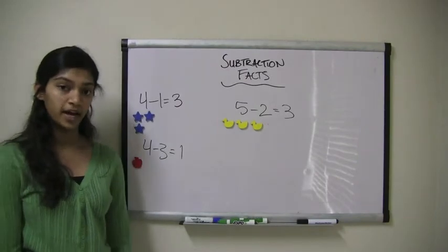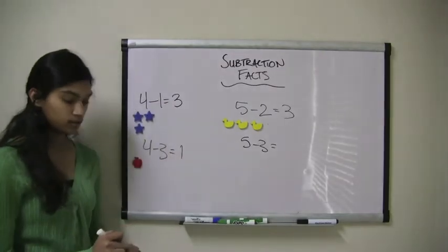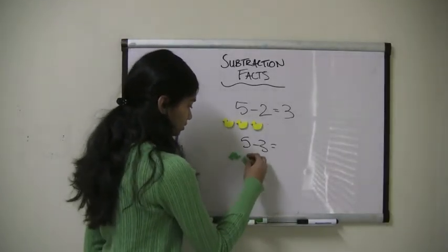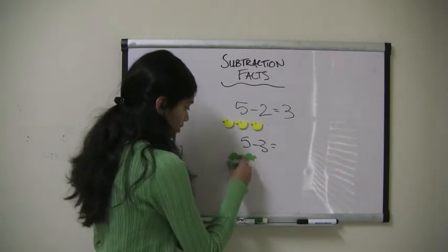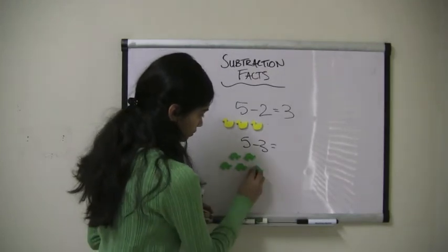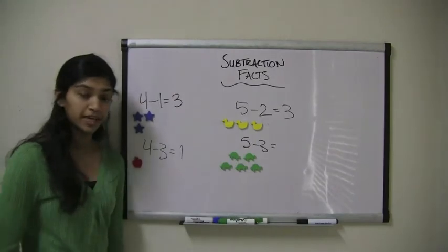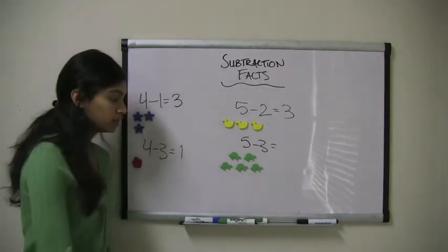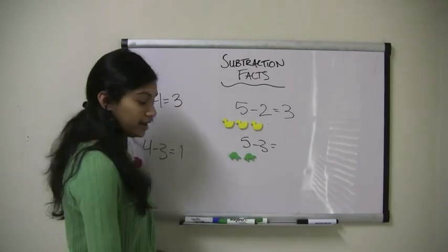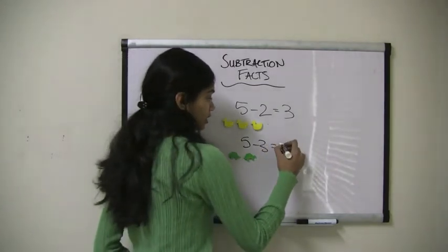But what if I had 5 minus 3? Well, I have 5 turtles: 1, 2, 3, 4, 5. And I want to take away 3 from 5. So I take away 1, 2, 3. And now I have 1, 2 turtles left. So 5 minus 3 equals 2.